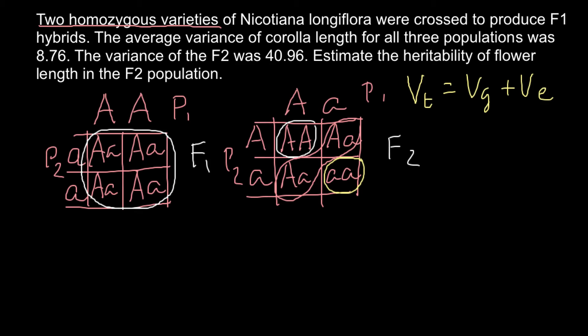In our problem, the first three populations are parent 1, parent 2, and the F1 generation — all genetically uniform. All plants look like clones of each other. But in the F2 generation, each plant is genetically unique, so we expect total variance to equal genetic variance plus environmental variance. In the F1 generation, all variance is due only to environmental factors, because all genotypes are identical.